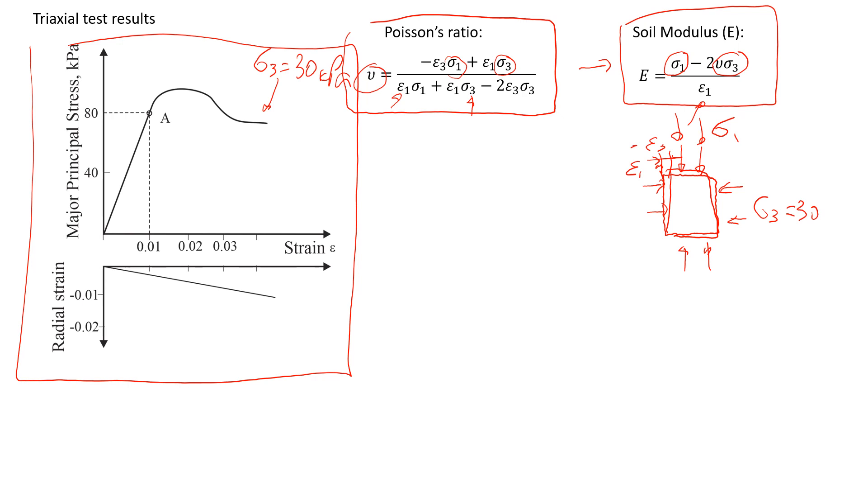This is the setup of the test that we're going to look at. We will look at these two curves. This one shows change in the principal stress. This is major principal stress here. As already mentioned, confining pressure doesn't change during the experiment. We keep it 30 kPa. What we're going to do now is estimate the Poisson's ratio for this soil for point A.